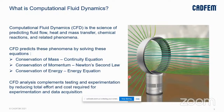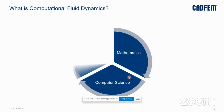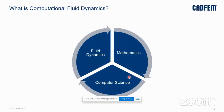CFD is not used to replace experimental testing completely. It complements testing and experimentation by reducing the total effort and cost required for data acquisition. CFD is a combination of Fluid Dynamics, Mathematics, and Computer Science. Fluid Dynamics refers to fluids in motion and flow behavior, such as turbulence and heat transfer. Mathematics describes the governing equations in the form of partial differential equations and numerical methods for solving them. Computer Science converts these equations into computer programs and software to harness the power of high-performance computers.